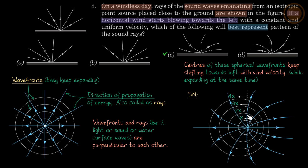Where the center of the circle is, so the center will go. The center of these spherical wavefronts keep shifting toward left with a wind velocity while expanding at the same time.